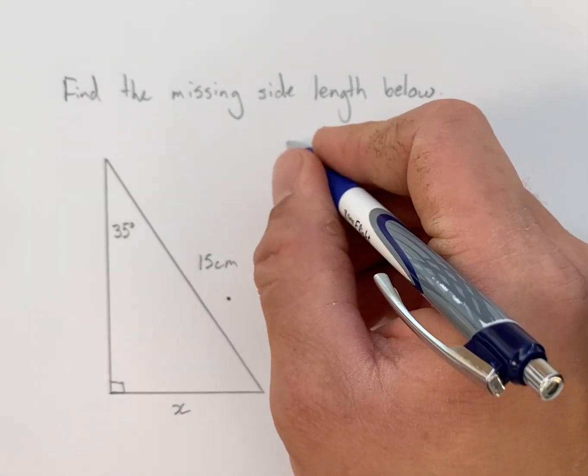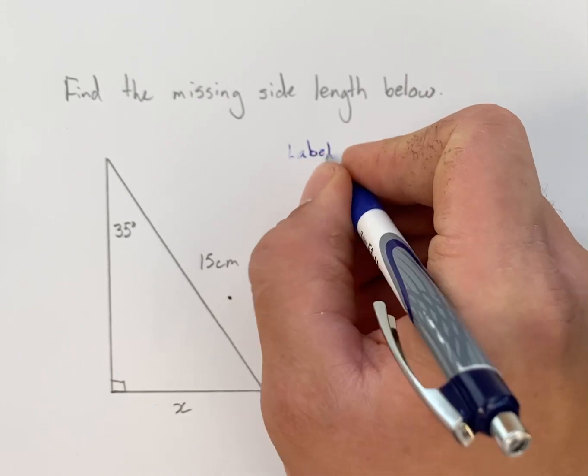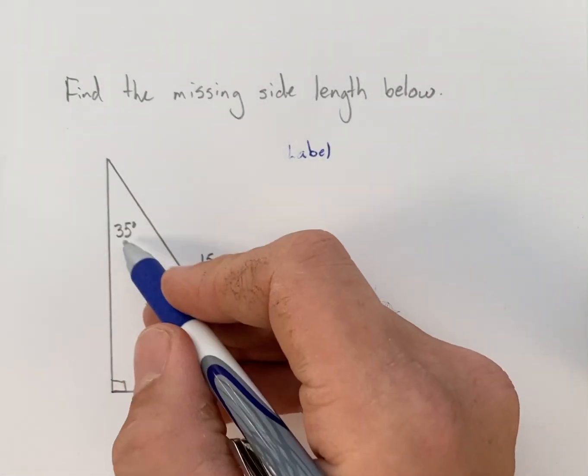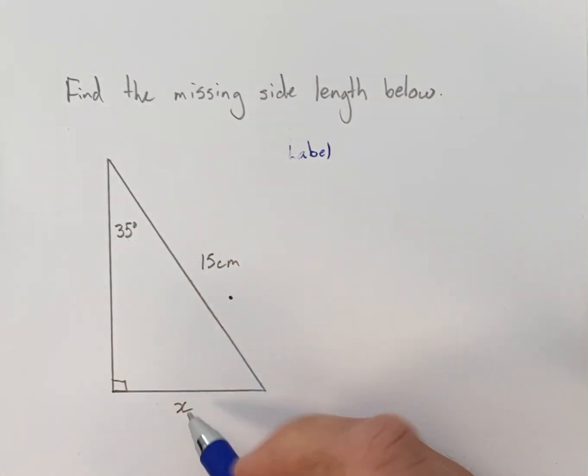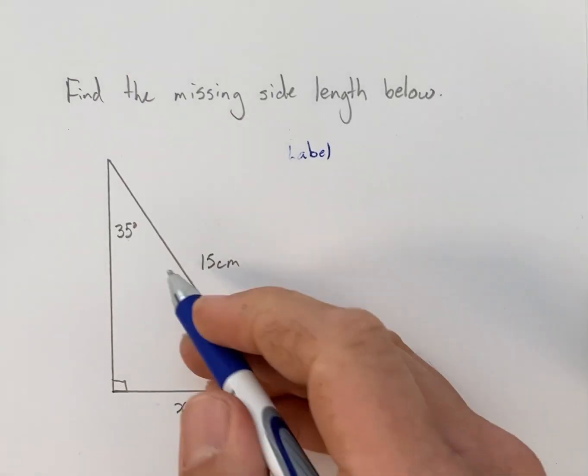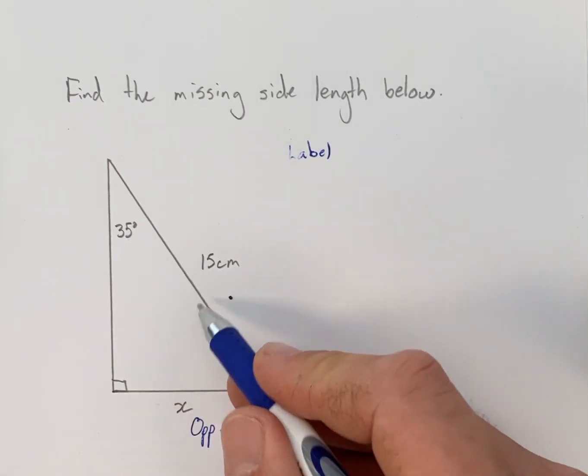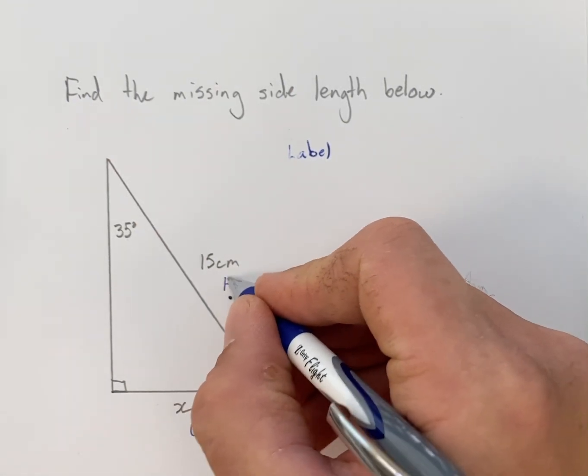Our first step is always to label the triangle. So we're going to label from the indicated angle across to the opposite side, and we know the longest side of the triangle, the one that is opposite the right angle, is always known as the hypotenuse.